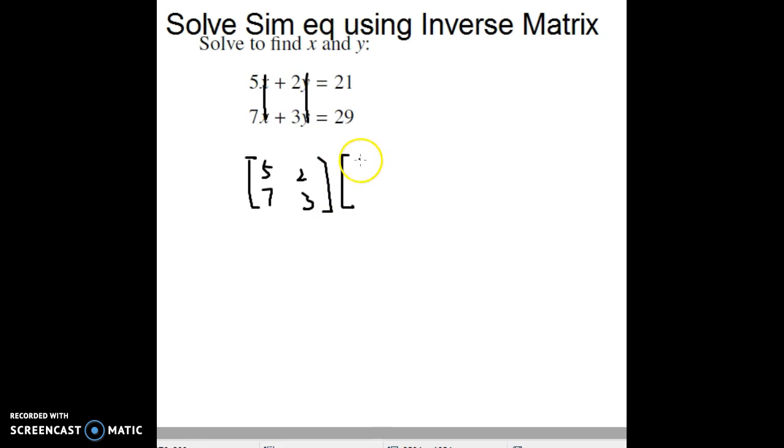x, y, we write it in this way, top and bottom, and equal to still stay as equal to in the middle, and then 21 and 29 is another matrix.